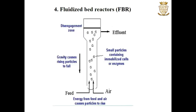In a fluidized bed bioreactor or FBR, the microbial cells or enzymes are immobilized onto solid granular materials. These small particles have a tendency to settle at the bottom of the fermenter due to gravity. So the feed media and air are pumped in through the bottom of the fermenter at enough velocity to suspend the solid particles in solution. This upward force of the media and air along with the downward movement of the particles allows uniform particle mixing and temperature control. The upward flow of the feed makes the particles behave like a fluid — a process known as fluidization.